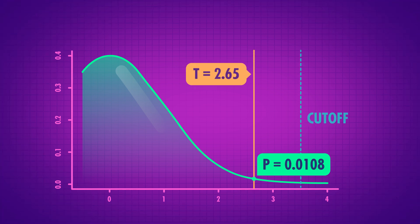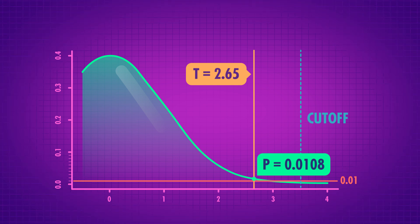Putting it all together, we get a t-statistic of about 2.65. If we plug that into our computer, we can see that this test statistic has a p-value of about 0.0108. Since we set our alpha at 0.01, a p-value needs to be smaller than 0.01 to reject the null hypothesis. Ours isn't — barely, but it isn't. So it might have seemed like the larger repair shop was definitely going to be faster, but it's actually not so clear. This doesn't mean there isn't a difference — we just couldn't find any evidence that there was one. So if you're trying to decide which shop to take your car to, maybe consider something other than speed.